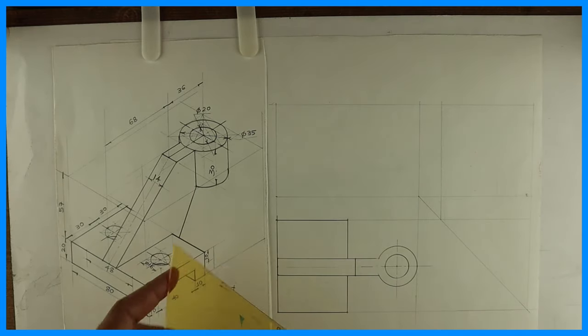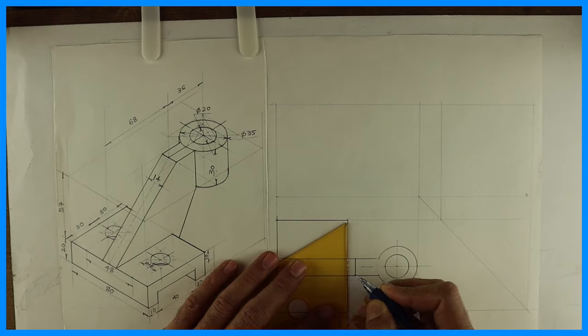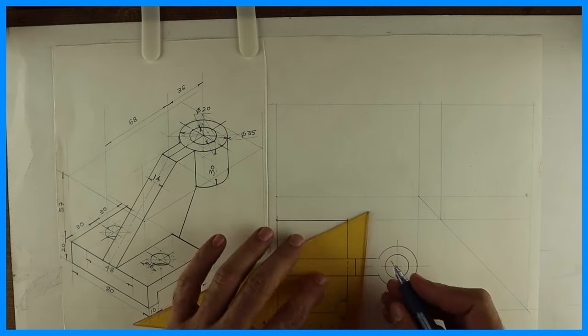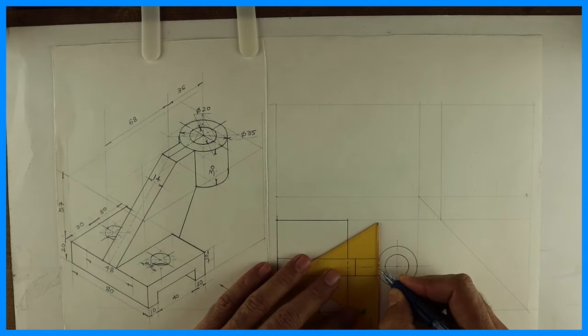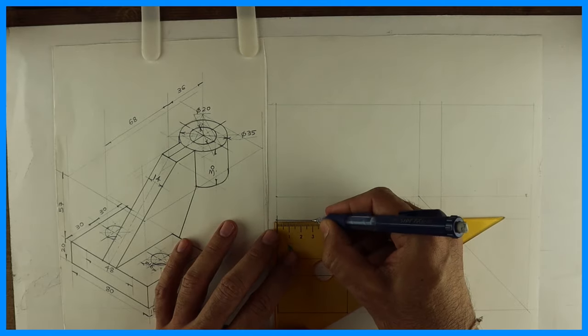Now if you see over here also there is a dotted line because this portion you can't see from the top. See this. And this part is also dotted. Now there are two circles so you'll take midpoint.